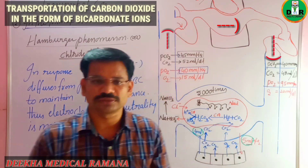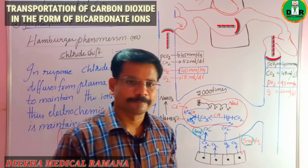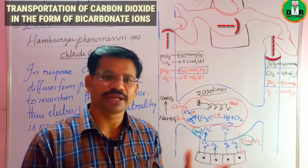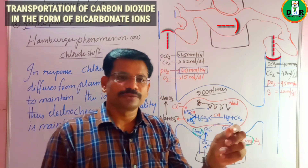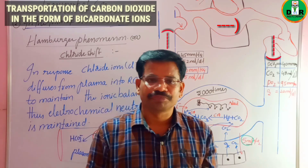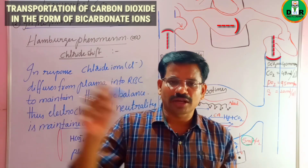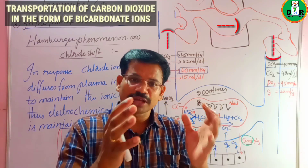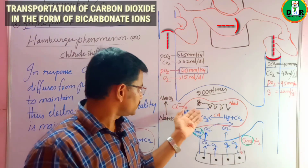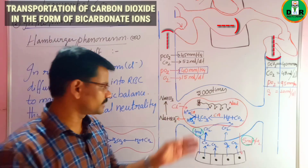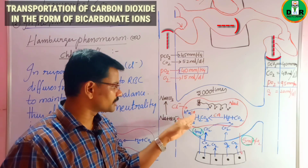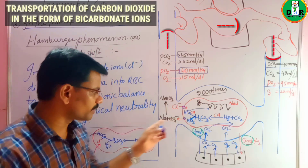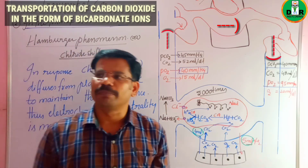After dissociation of carbonic acid into H⁺ and HCO₃⁻, the H⁺ ions are bound by hemoglobin while the HCO₃⁻ (bicarbonate) ions move outside the RBC. These bicarbonate ions diffuse from high concentration to low concentration through special transport proteins in the RBC membrane, exiting into the plasma.